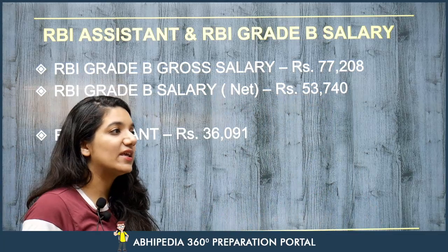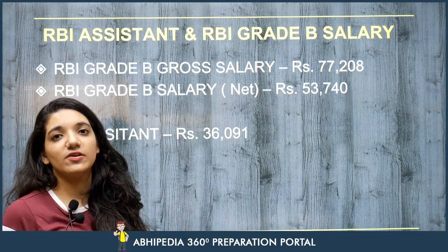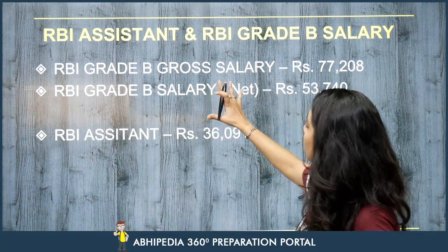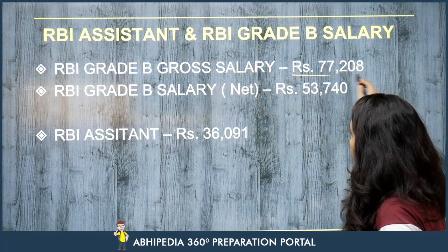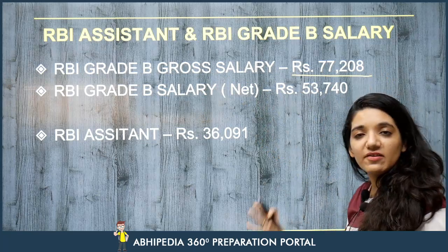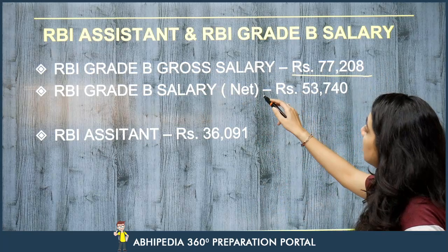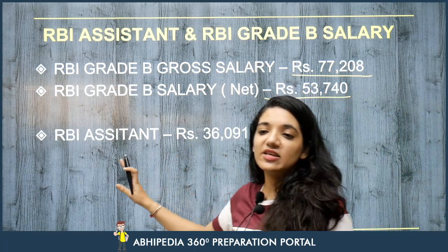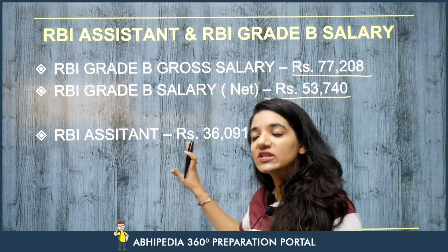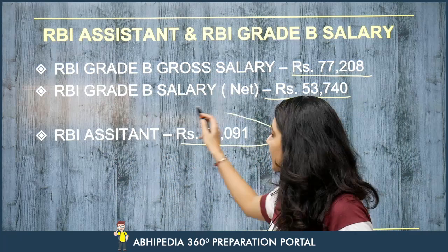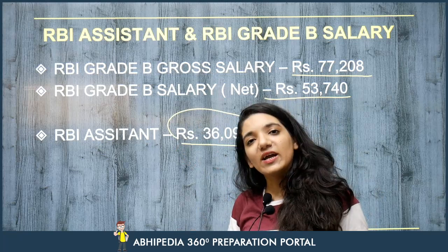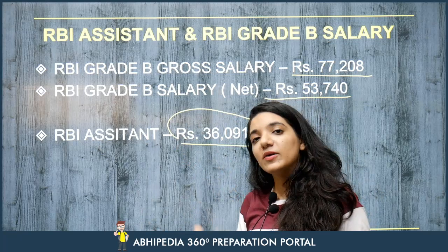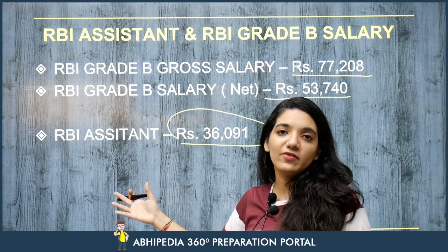The salary details are different for both. Presently, the gross salary for RBI Assistant is roughly 47,000 rupees, but in-hand it is around 35,000 rupees. When we talk about RBI Grade B, the gross is about 77,000 rupees with in-hand around 53,000 rupees. There is a clear difference - almost double - because the job profile demands it.